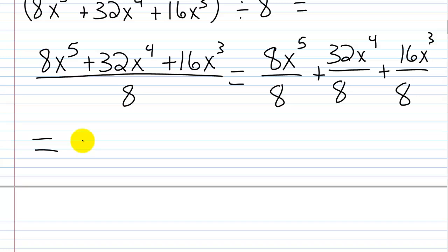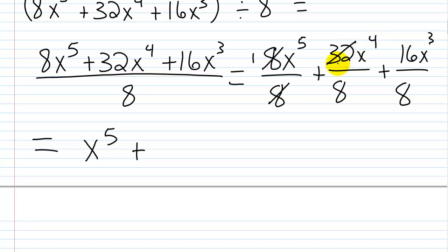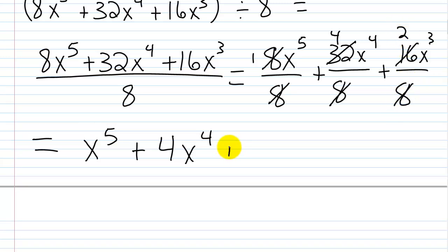Working through each term: 8x⁵/8 — since 8/8 = 1, we're left with x⁵. Then 32x⁴/8 — since 32/8 = 4, we get +4x⁴. And 16x³/8 — since 16/8 = 2, we get +2x³. So our answer is x⁵ + 4x⁴ + 2x³.